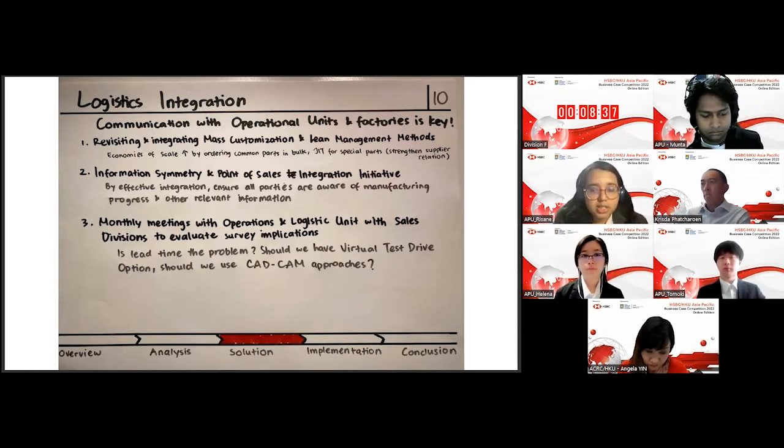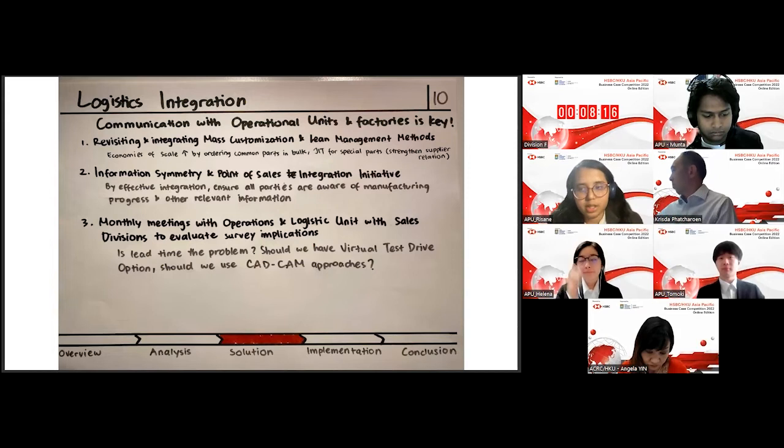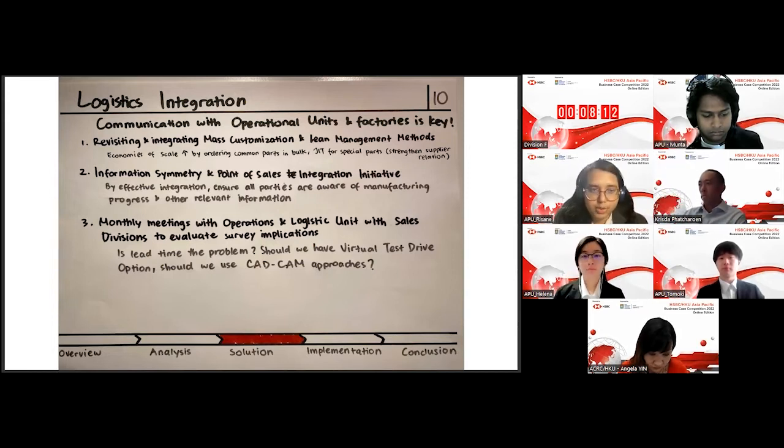These can be ordered in bulk and then they can benefit from purchasing economies of scale. Next off, for the customization segment of mass customization, they would be able to use JIT, just-in-time method, for ordering special parts so that although there is a buffer stock level, the required parts come just when they are needed in order to increase efficiency. A key part for this method to be successful would be strong supply relation and to ensure that their suppliers are also being efficient. They could also try to have Kaizen method in their factory workplace.